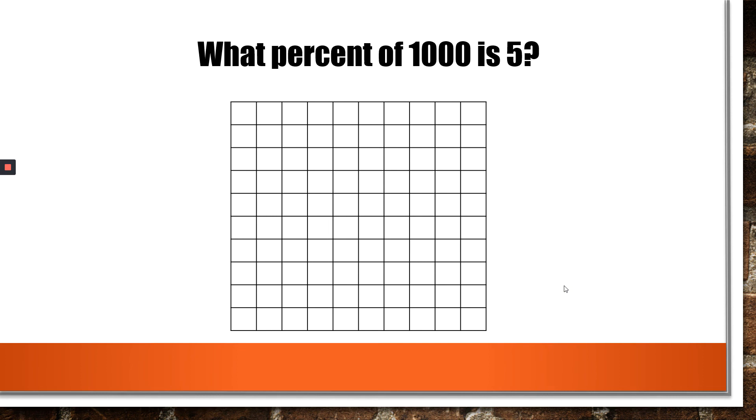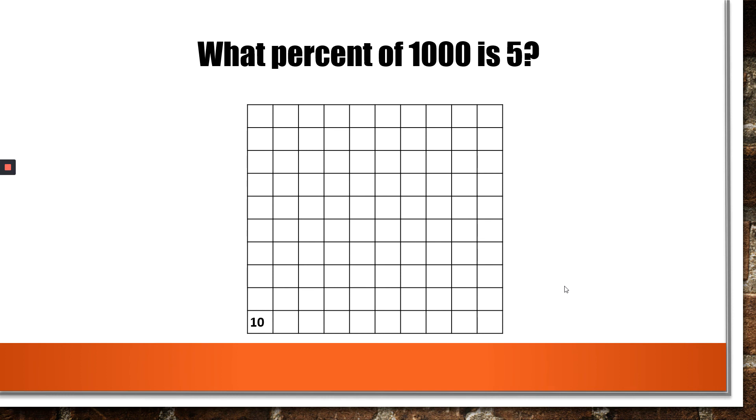One more. What percent of 1,000 is 5? This one is my favorite. So, we look at the whole. That's 1,000. If you look at this one column, the whole column would be worth 100, because it takes 10 hundreds to make 1,000. Then what would be in one little box? You guessed it, 10. Well, if I have 10 in one little box, how will I represent 5? Yes, half of a box. So, that means what percent of 1,000 is 5? One half percent.